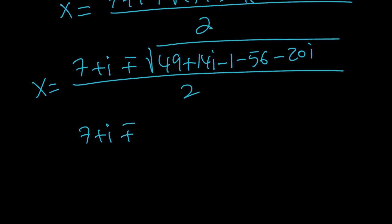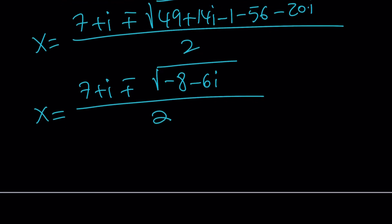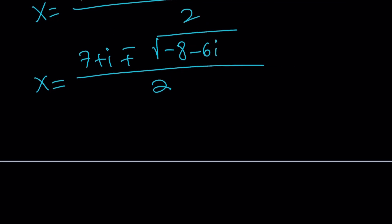49 minus 1 is 48. 48 minus 56 is negative 8. So, we have a negative 8. 14I minus 20I is going to be negative 6I. So, this is the number we need to square root. And square rooting can be a little hard. But if you keep something in mind, it's going to be a little easier. Negative 8 minus 6I can be written as follows.